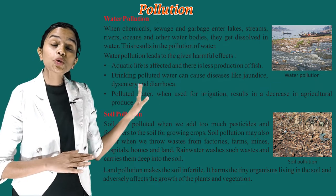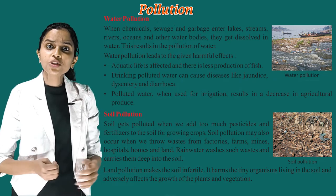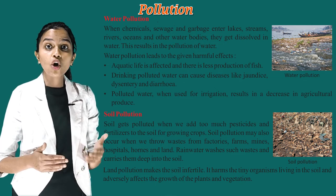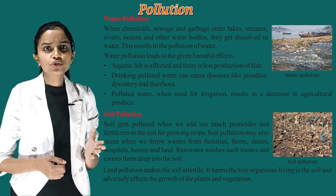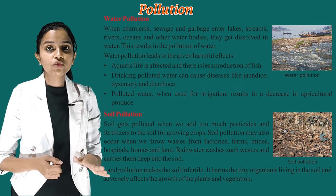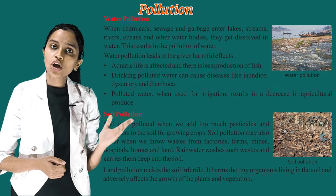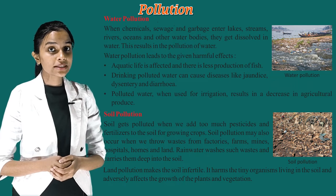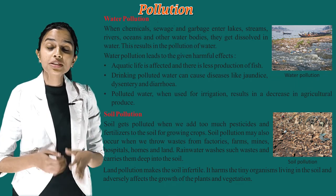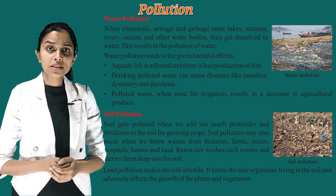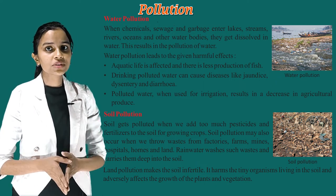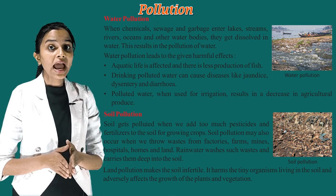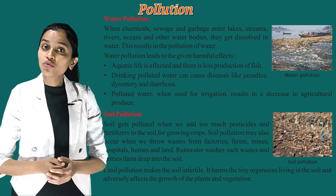The next type is soil pollution. Soil gets polluted when we add too many pesticides and fertilizers for growing crops. Soil pollution may also occur when we throw waste from factories, farms, mines, hospitals and homes onto land. Rainwater washes such wastes and carries them deep into the soil. Land pollution makes the soil infertile and harms tiny organisms in the soil, adversely affecting the growth of plants and vegetation.